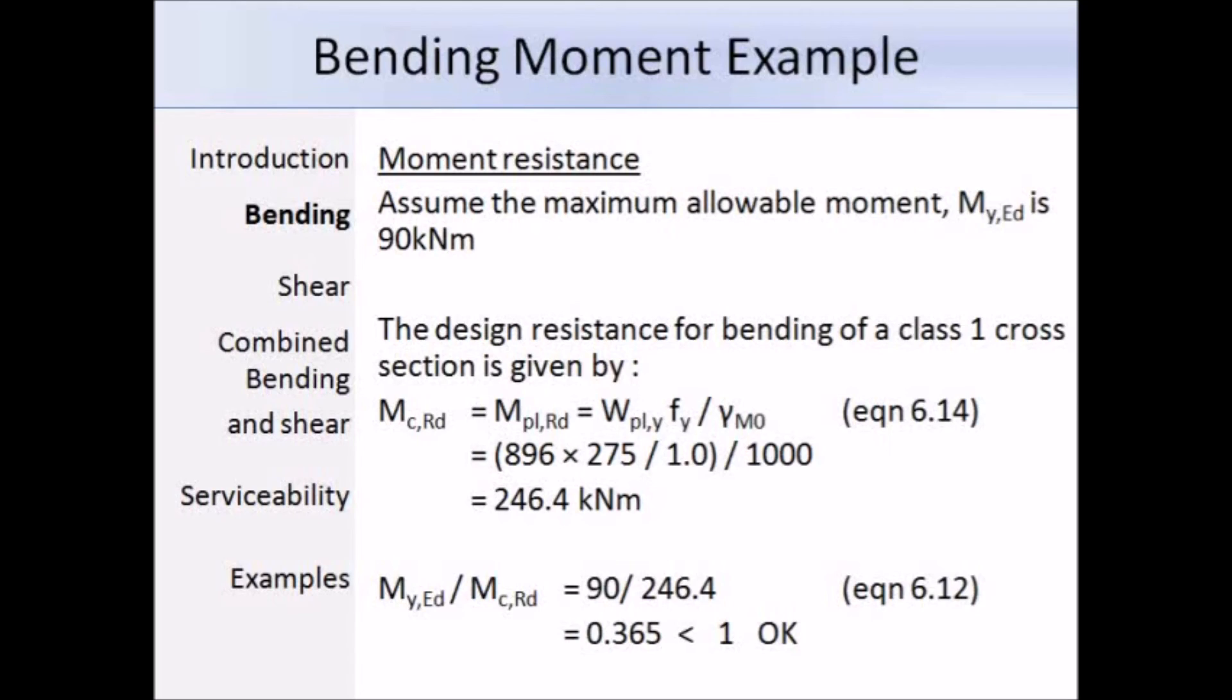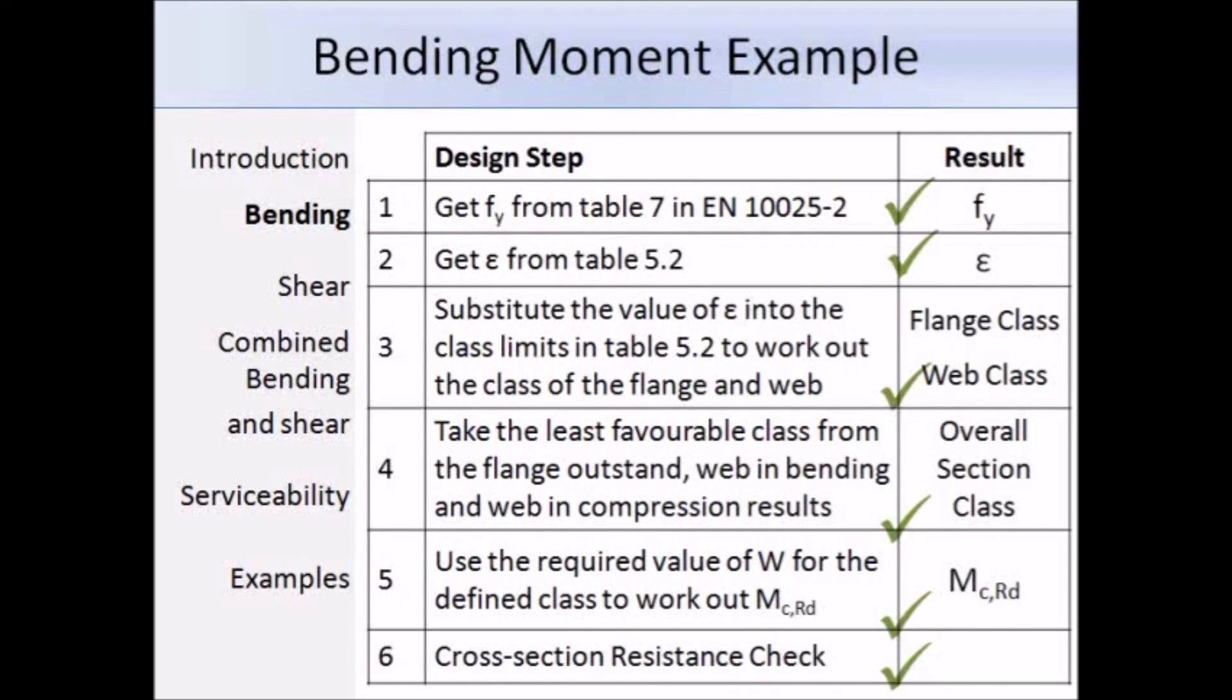Now the final step is to carry out the design check. We're going to be using expression 6.12. Substituting in the value of 90 kNm for the design moment MED and 246.4 kNm for the design bending resistance, we get an answer of 0.365, which is well below 1. Therefore the section is suitable to resist bending. Those are all of the steps completed to check that the section can provide sufficient resistance to the maximum design bending moment. Note that the section would also need to be checked if it can resist shear and that its maximum deflections are liable.